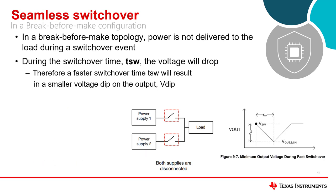To keep the system operating, the voltage cannot drop below the system's operating range, since this would cause a system reset. For uninterrupted operation, the output voltage needs to remain within the operating range to provide a seamless switchover. Therefore, it's important to consider the switchover time as a key specification in power mux devices — the faster the switchover time, the less output voltage will drop.